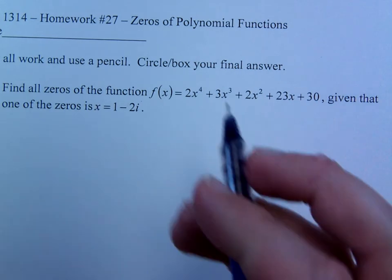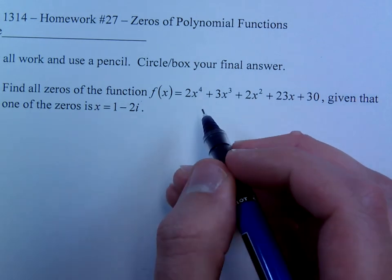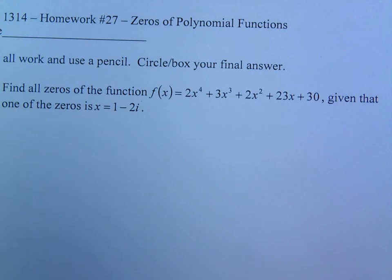Now this first function has degree 4, which means I'm looking for how many zeros? 4. That's right, I'm looking for 4 solutions, and how many have I given you? 2. I've given you 2? How is that possible? There's only one listed here.